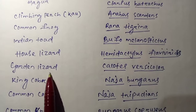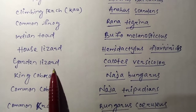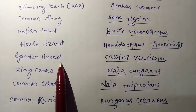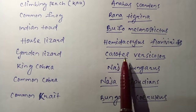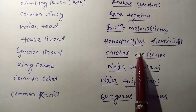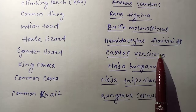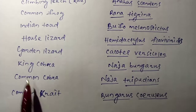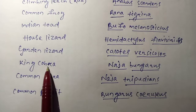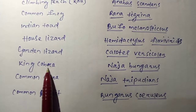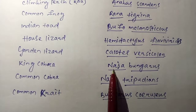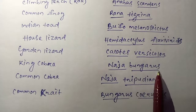Next is Garden Lizard. The scientific name is Calotes versicolor. Next is King Cobra. The scientific name is Naja bungarus.